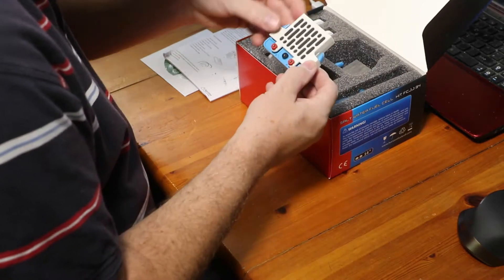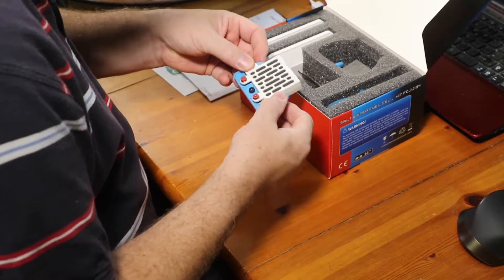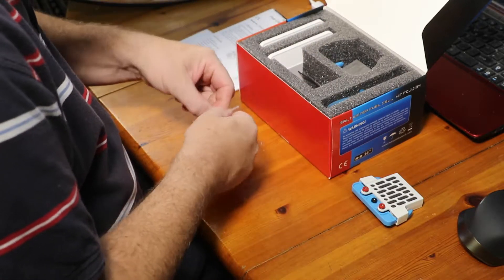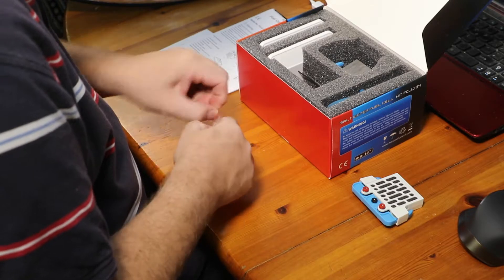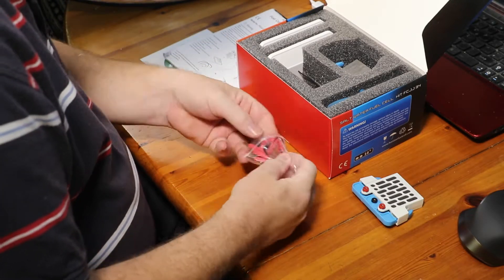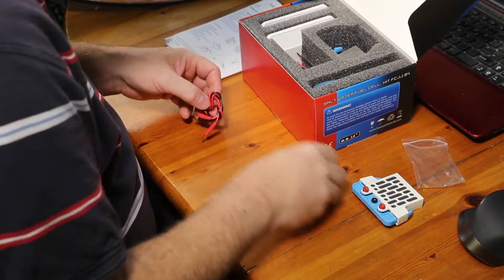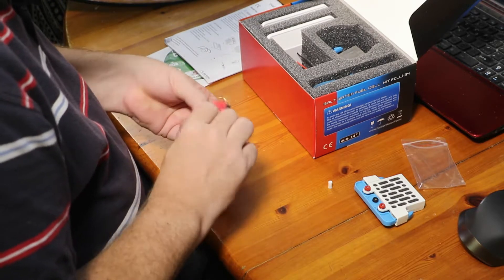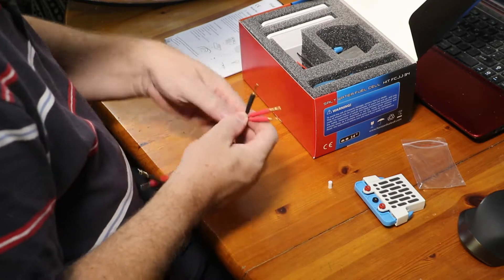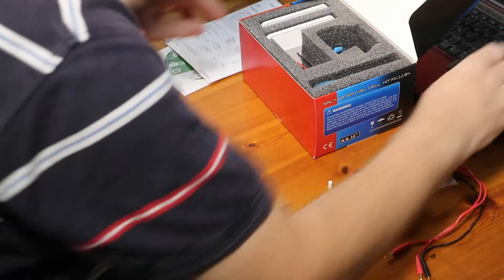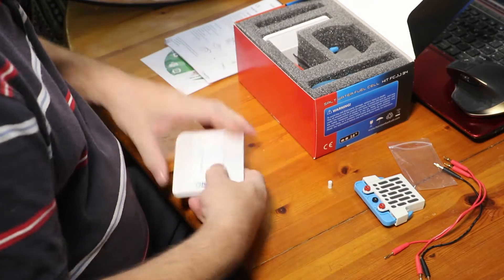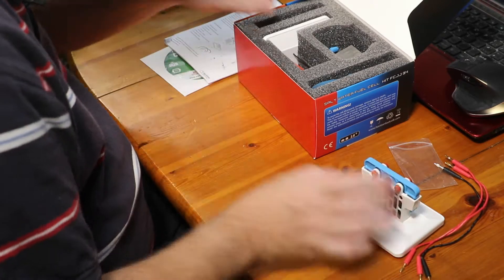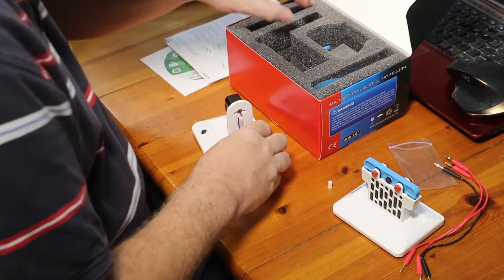We've got a saltwater fuel cell, some leads, a little white piece of plastic. We've got three leads, two red, one black. We've got a base for this.